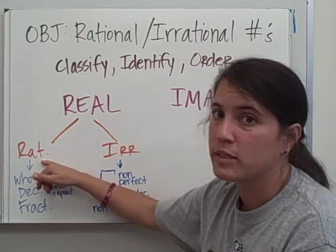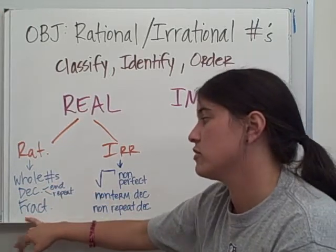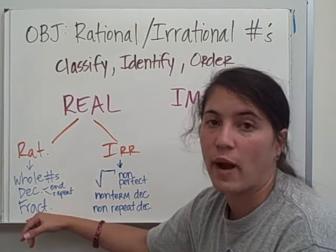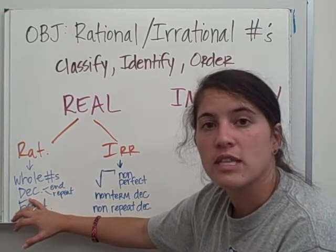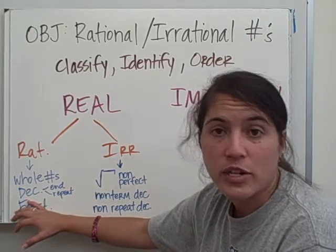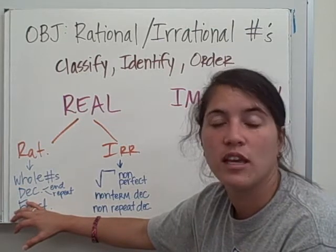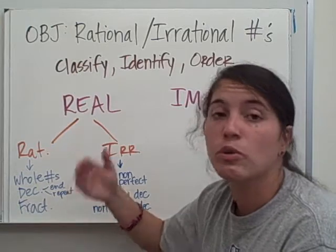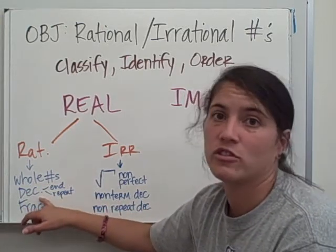Rational numbers are the things you've probably dealt with up until this point: whole numbers, most decimals, and fractions. All whole numbers and all fractions are going to be rational. Decimals that are rational are decimals that either repeat or just end — like 5.25, negative 7.3, or negative 10.125. If it ends or it repeats, it is a rational number.